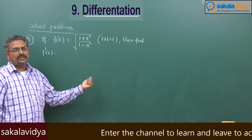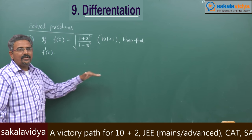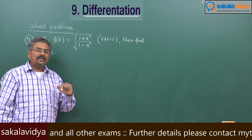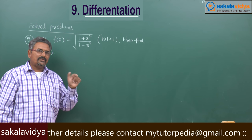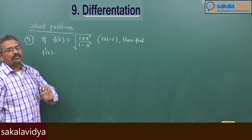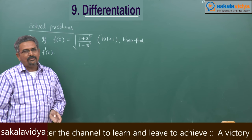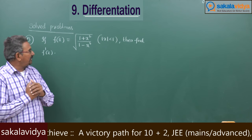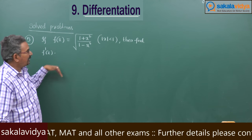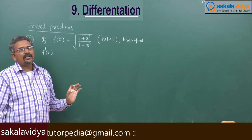Let us suppose 1 plus x square by 1 minus x square equals u, then f of x becomes root u. So f dash x — writing y equal to f of x — is dy by du into du by dx. Here dy by du means derivative of root u, which is 1 by 2 root u, and du by dx means d by dx of 1 plus x square by 1 minus x square, evaluated by the quotient rule, though that can be lengthy.